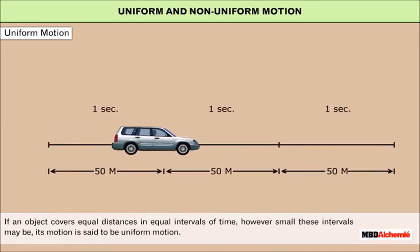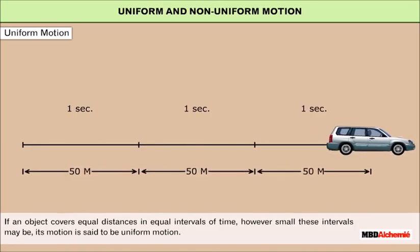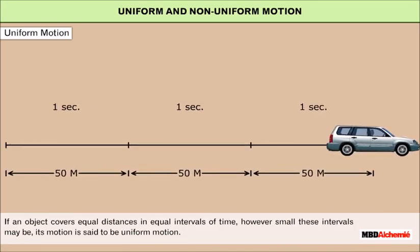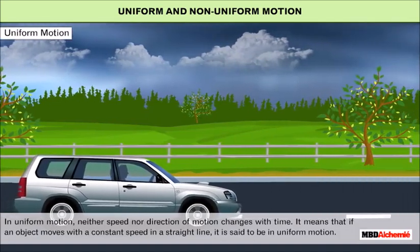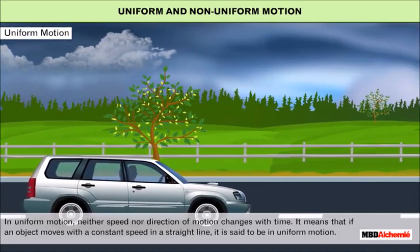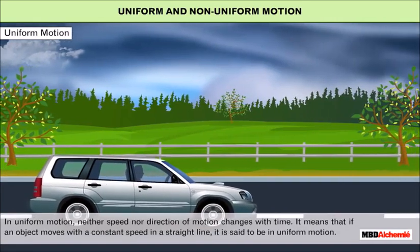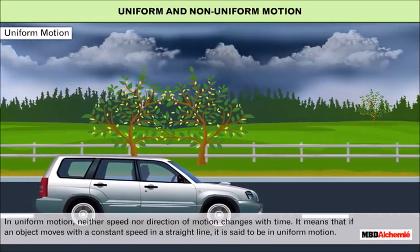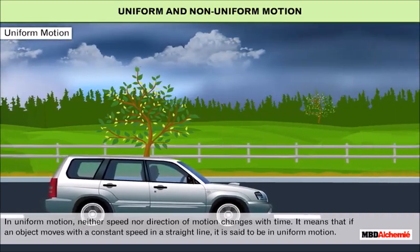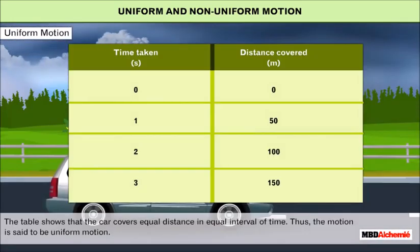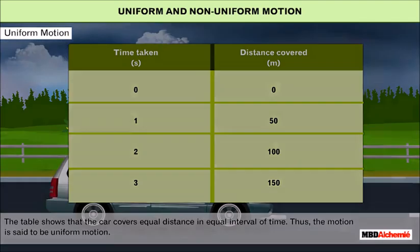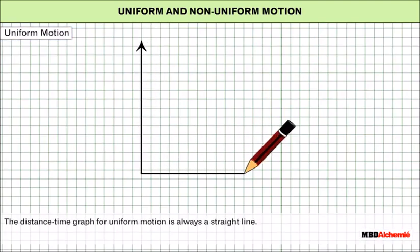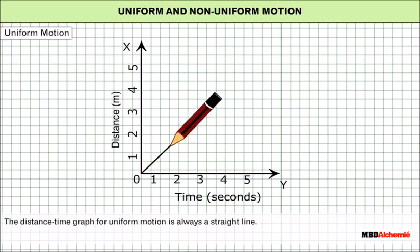Uniform motion: if an object covers equal distances in equal intervals of time, however small these intervals may be, its motion is said to be uniform. This means if an object moves with a constant speed in a straight line, it is in uniform motion. The table shows the car covers equal distances in equal intervals of time. The distance-time graph for uniform motion is always a straight line.